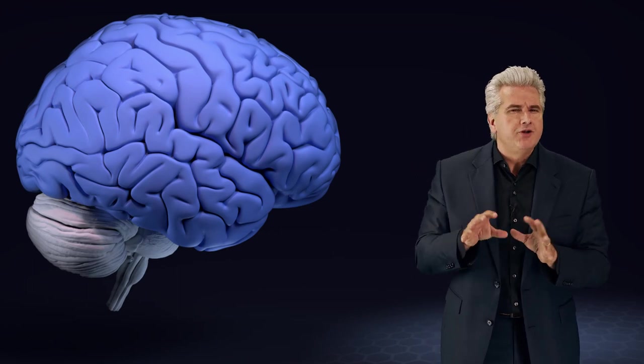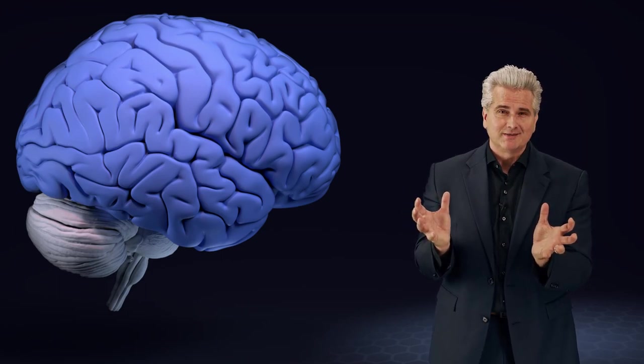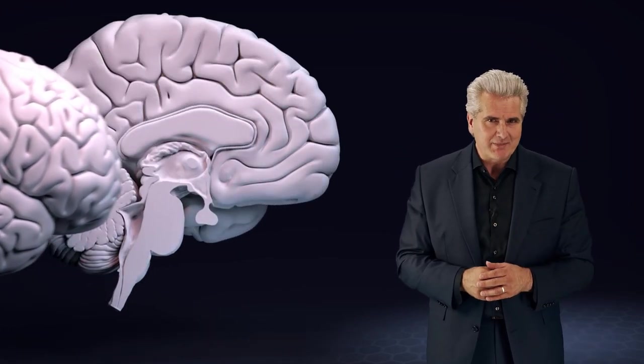The allocortex shows a regionally variable laminar pattern. All we see on the surface is isocortex. In order to see the allocortex, we have to look at the medial side of the hemisphere.